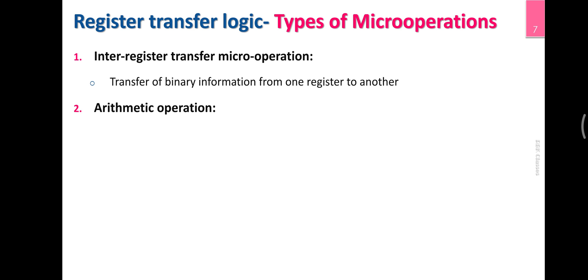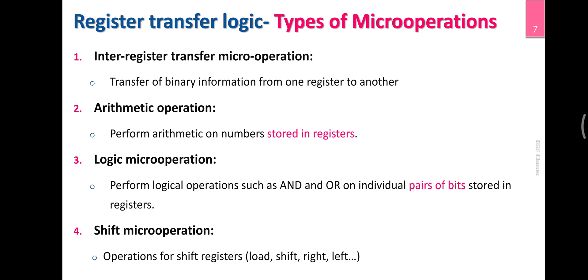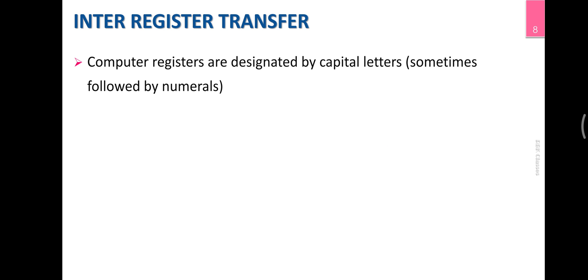Binary information in registers can be moved or copied. There are arithmetic operations like addition and subtraction. For logical operations, there are AND, OR, XOR operations. It is called shift and rotate operations — either left or right shift and rotate. Micro-operations are these four types: copy/move, arithmetic operation, logic operation, and shifting and rotating.